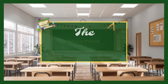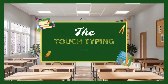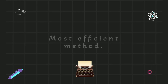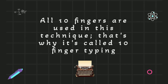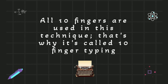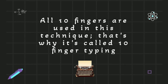The touch typing method is the most efficient method. All ten fingers are used in this technique, which is why it's called ten finger typing. It is the fastest and most scientific typing method, and almost every professional typist uses this technique.